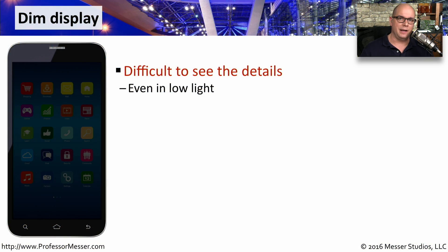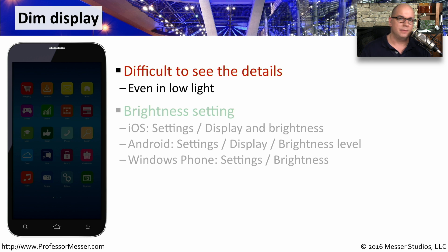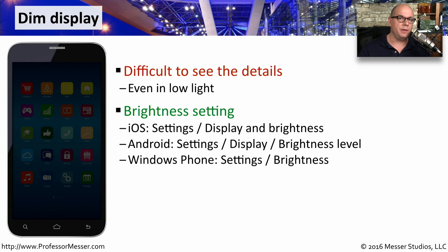Troubleshooting a dim display is obviously a problem because you can't see what's on the screen of your mobile device. Even in a low light situation, it may still be hard to pick out exactly what's being shown on the screen. If you can't at least see part of the screen, it may be worthwhile to try adjusting the brightness settings. Under iOS, you can find this under Settings, Display and Brightness.